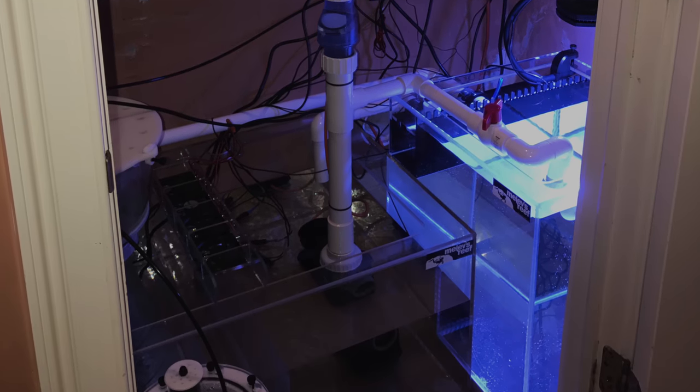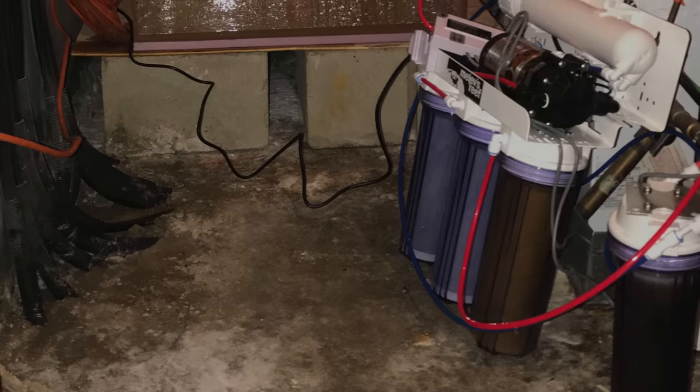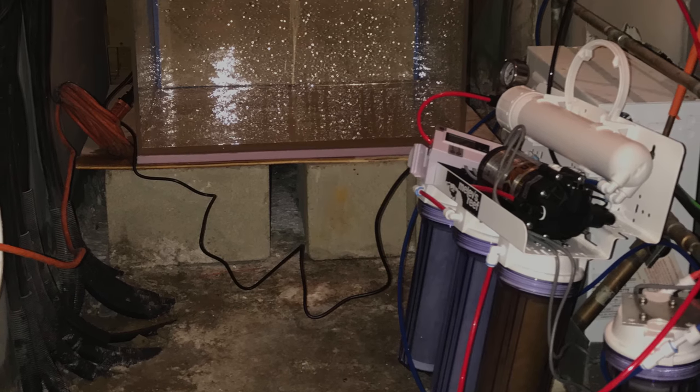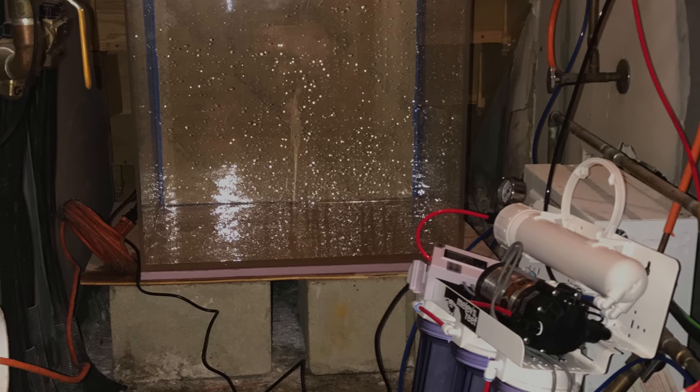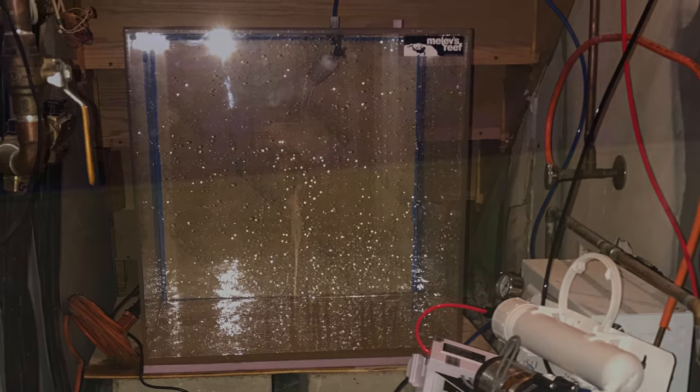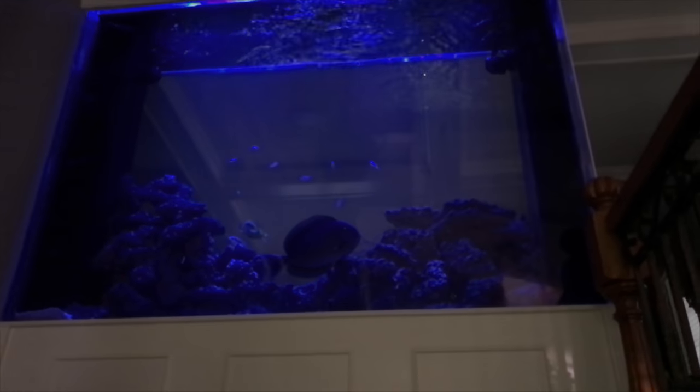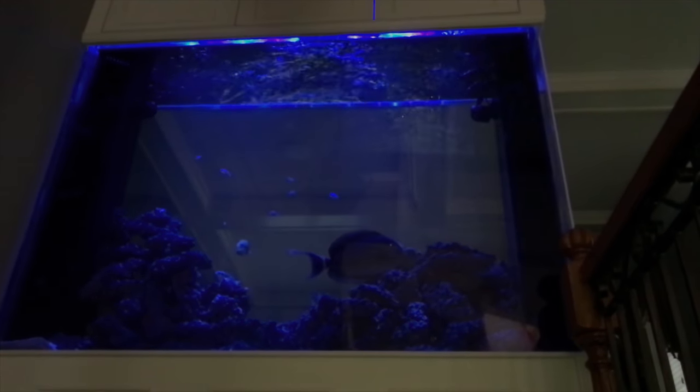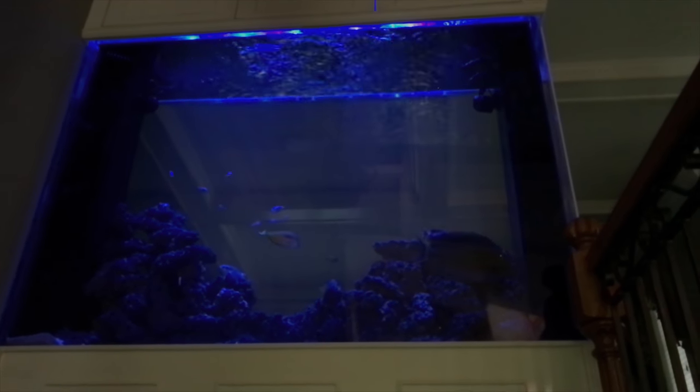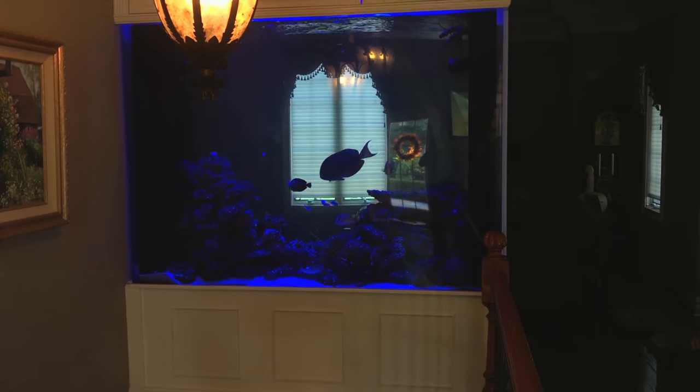We also eliminated the chiller and instead put a top-off container under the stairs with the RO/DI system, which is a Melev's Reef 150 gallon a day system. Tank itself is 72 inches long, 66 inches high, and 24 inches wide. It's 493 gallons in that display tank.